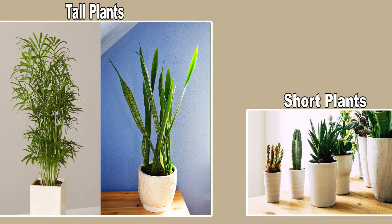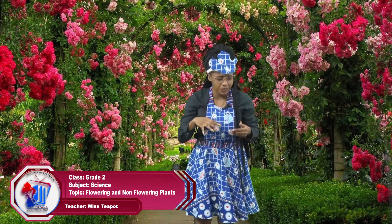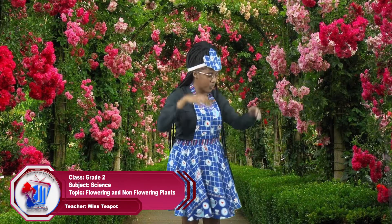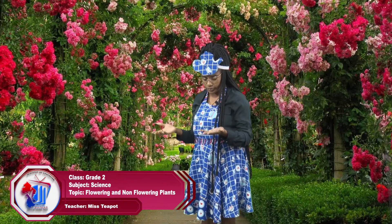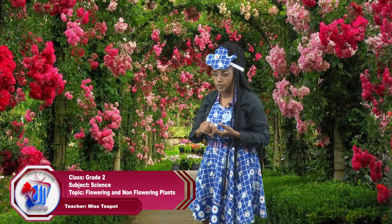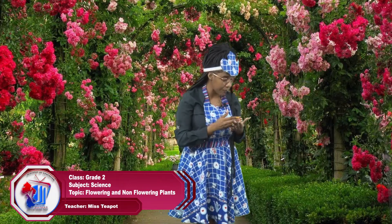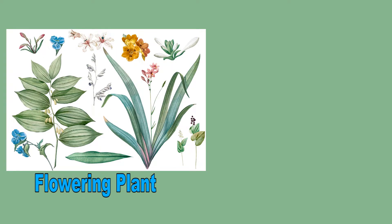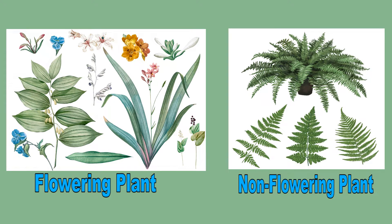Boys and girls, there are two special groups that all plants can go into. Can you help me? It's not by color, or by height, or by leaves, or by roots. These two categories are flowering and non-flowering. Every plant in the world can be grouped into these two categories — flowering and non-flowering.